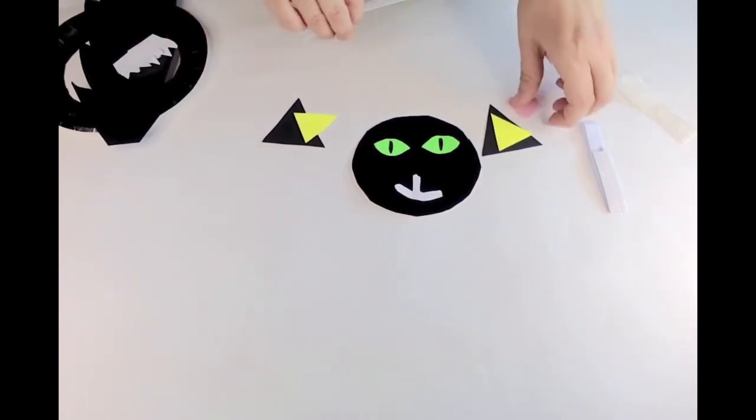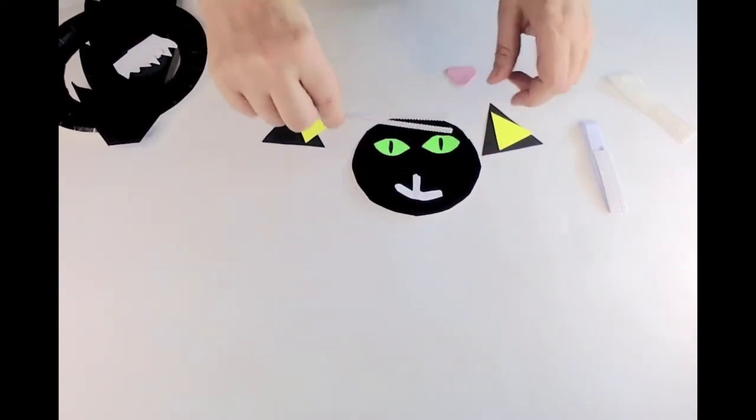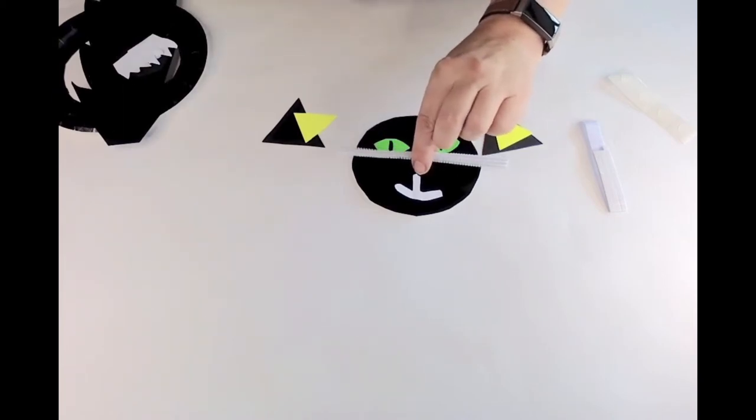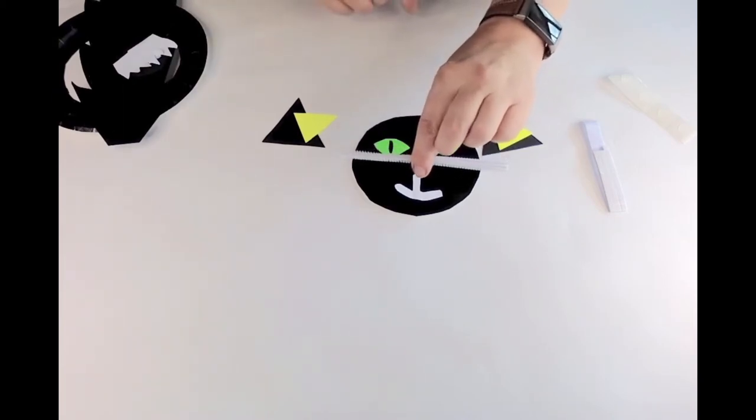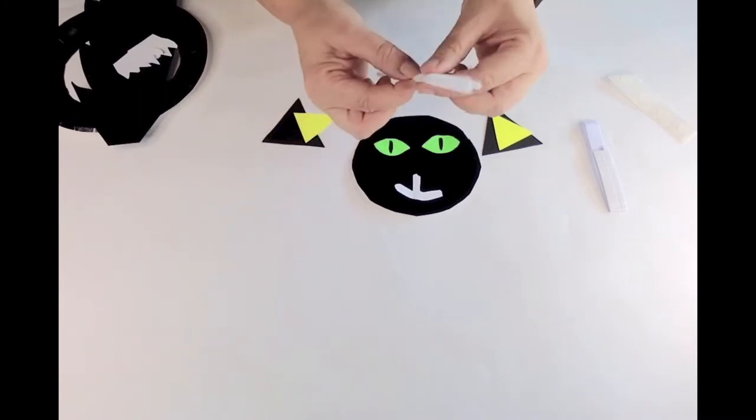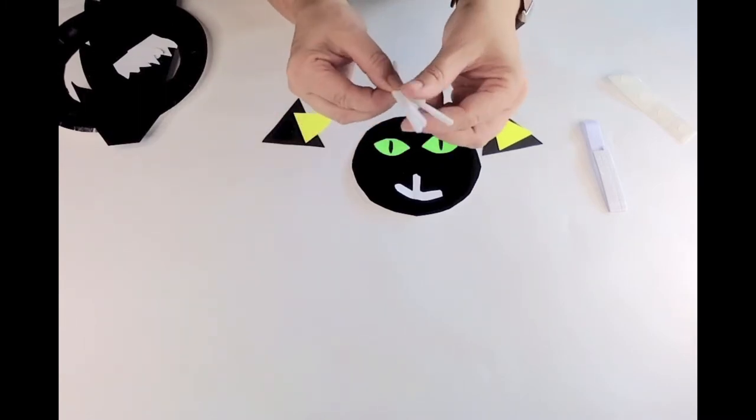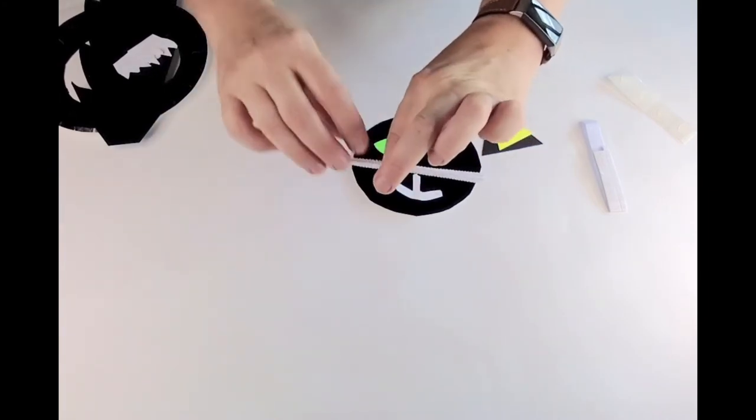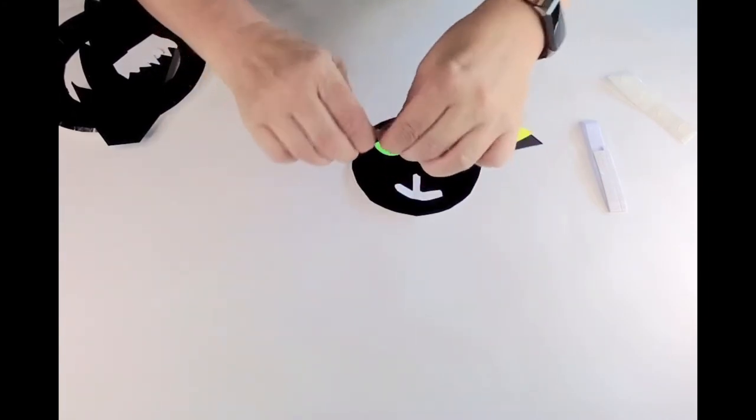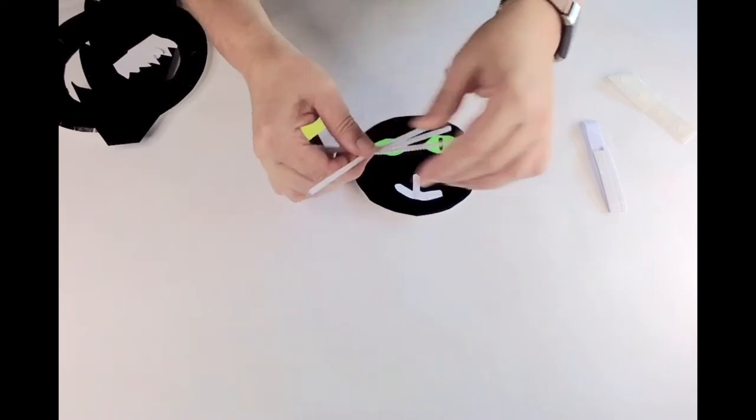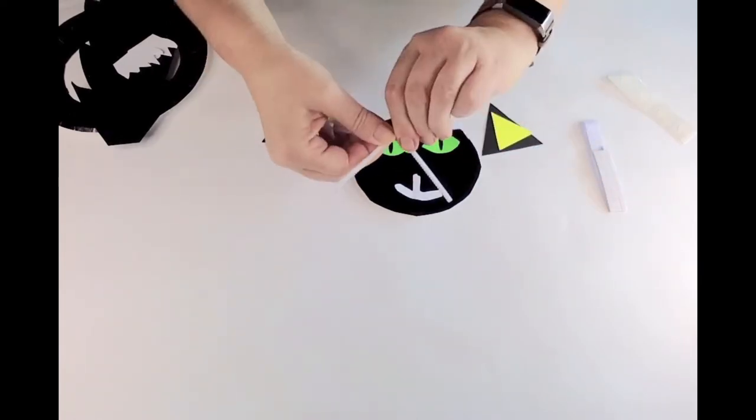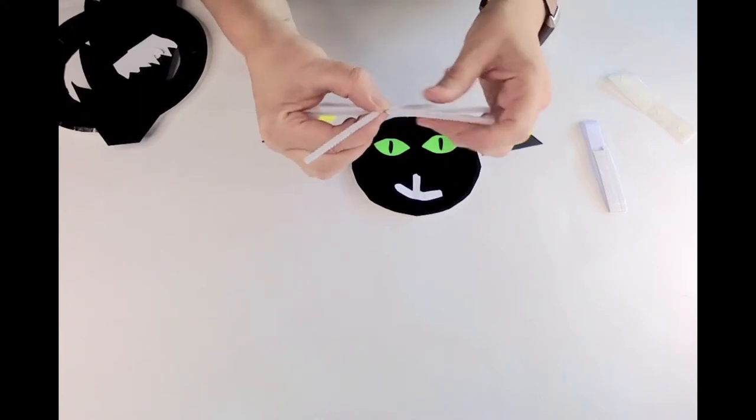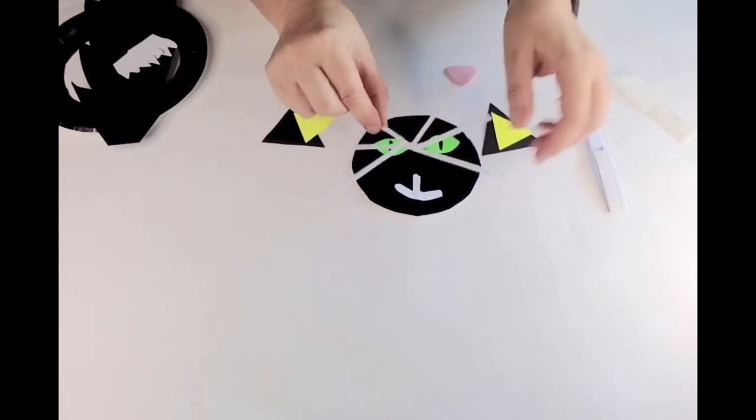So before we put the nose on we need to put the whiskers on. You've got three whiskers and you need to find the middle point of your whiskers like so and twist. Don't just twist once, twist about two or three times like that and then you can spread them out. So they should look like that.